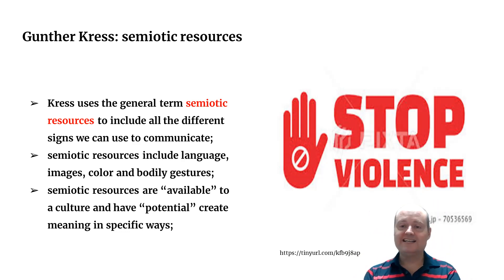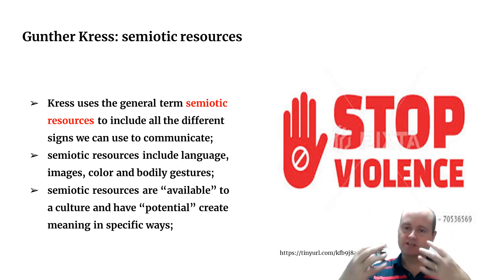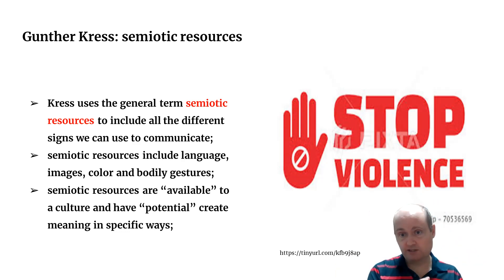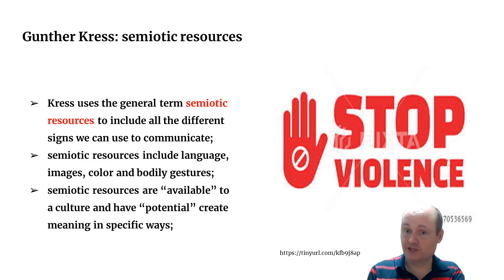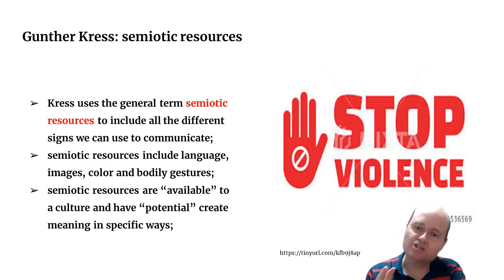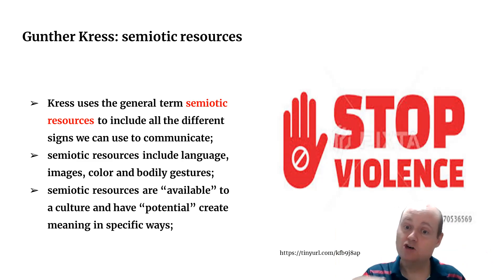Kress said that each culture has different semiotic resources available — language, color, images. In Korean culture you have your own language but also words borrowed from other languages, sometimes given different meanings. Each culture has a different set of semiotic resources with which it can make meanings — text, images, sounds and so on. We choose among these resources, and that's how we communicate and create meaning.